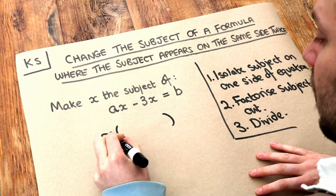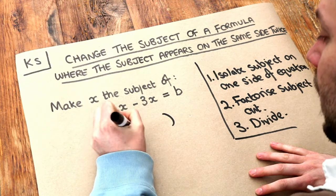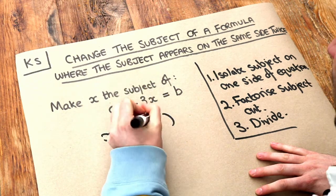what's in our bracket? Well, it's x times what is ax? It's a. x times what is minus 3x? It's minus 3.